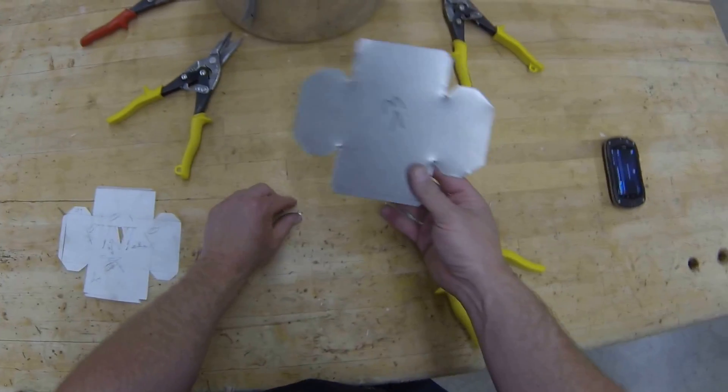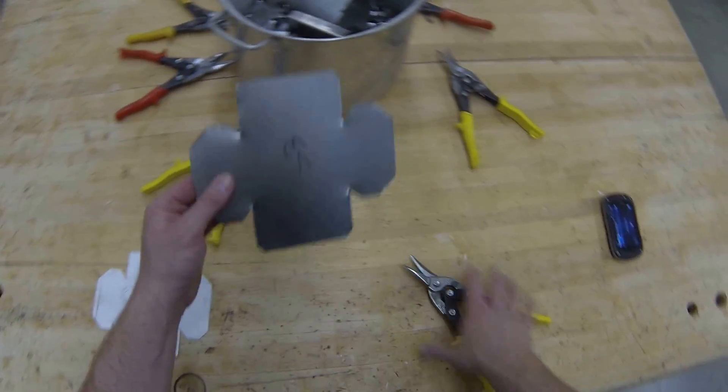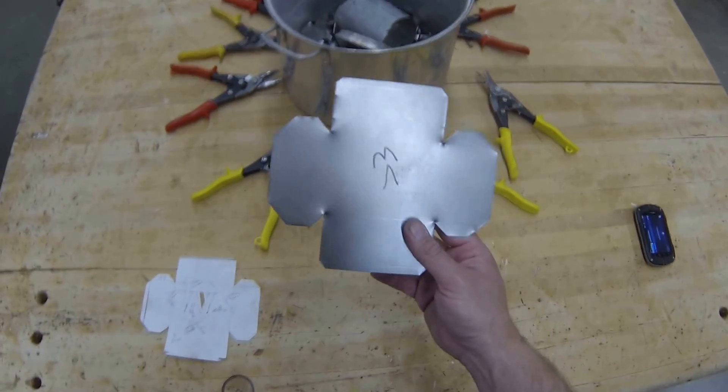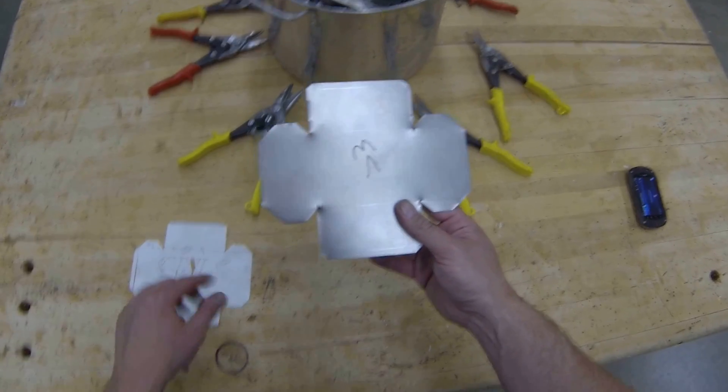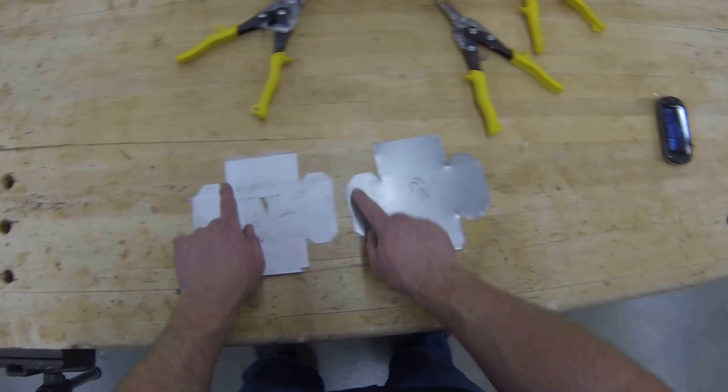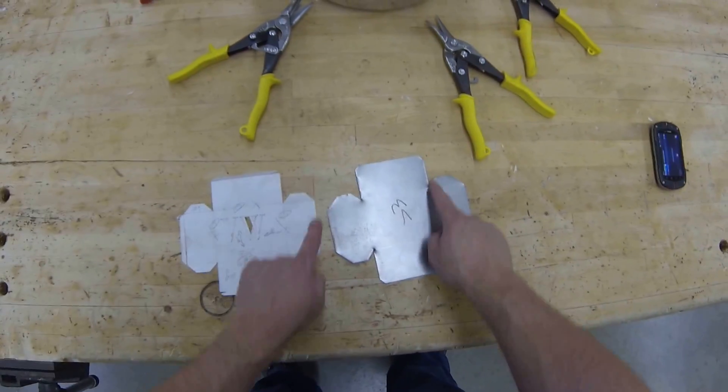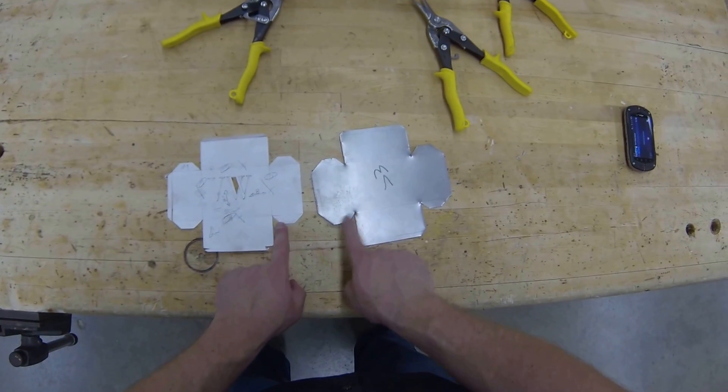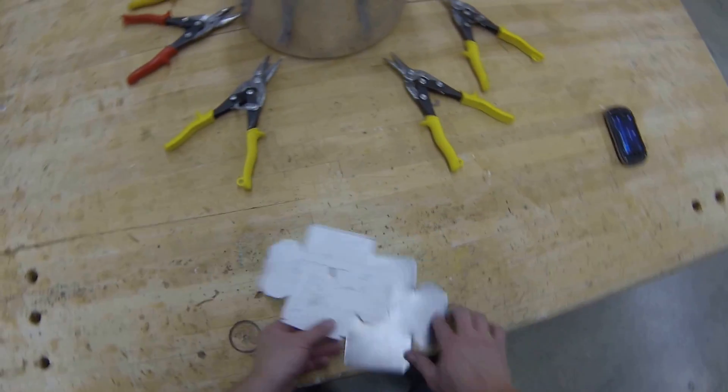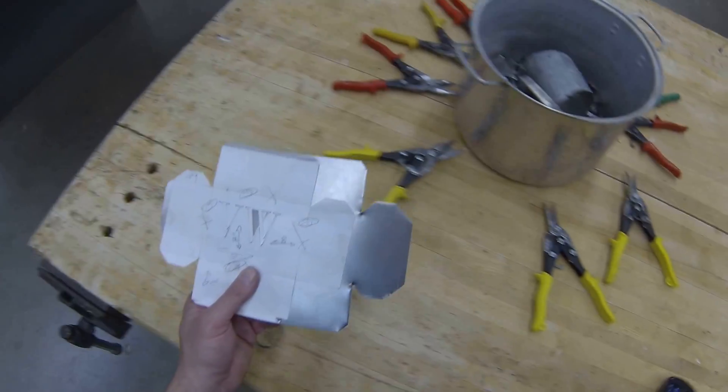Once you get done cutting it all out, you see how easy it was. What you're going to do next is have one of your fellow students come over and work with a partner to check all of your points and make sure you've got all of your cuts done. Once you get that accomplished, we're going to move over to the next table to do one simple task.